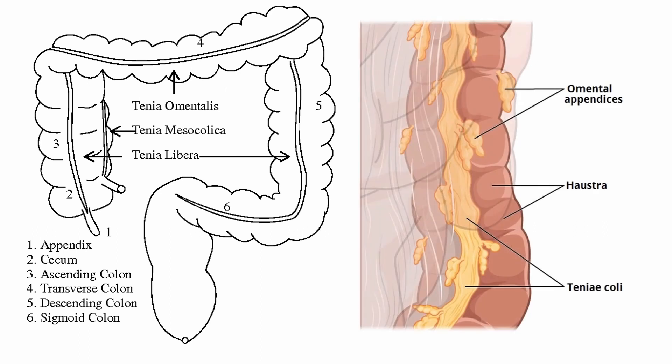Haustra are pouches of bowel formed by contraction of smooth muscle, and appendices epiploicae are fatty tags attached to the serosa layer.